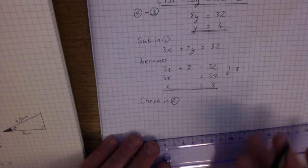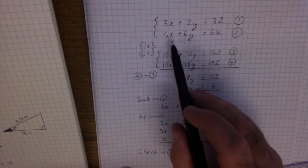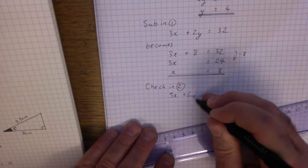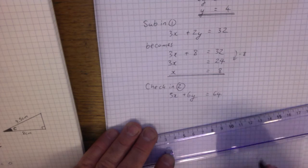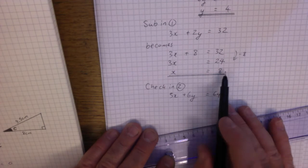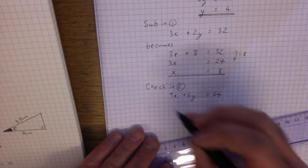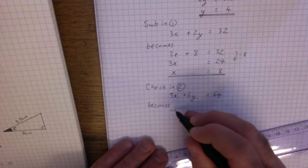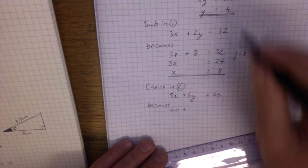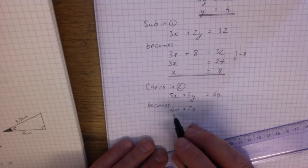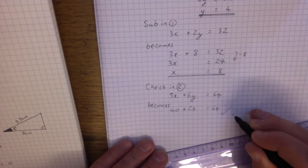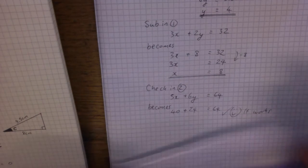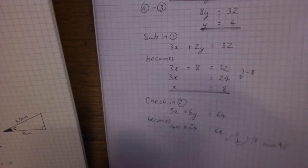My original equation 2 was 5x plus 6y equals 64. Now that I know x is 8 and y is 4, I substitute those in: 5 times 8 is 40, 6 times 4 is 24, and 40 plus 24 equals 64 — which is correct. So it all works out and we know we've got it right.